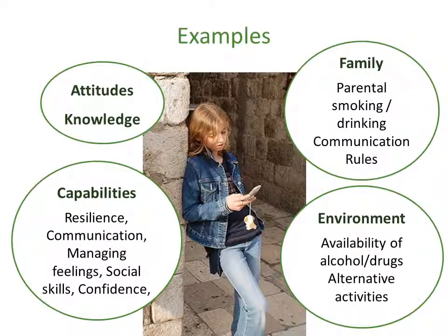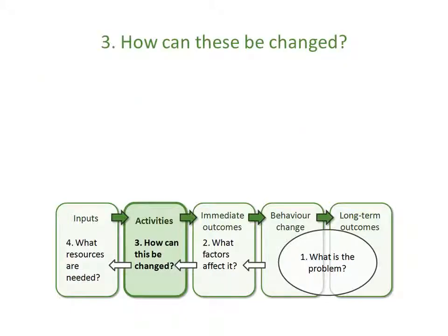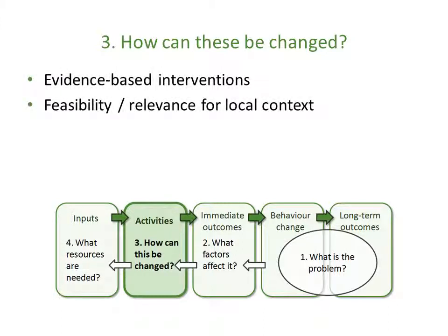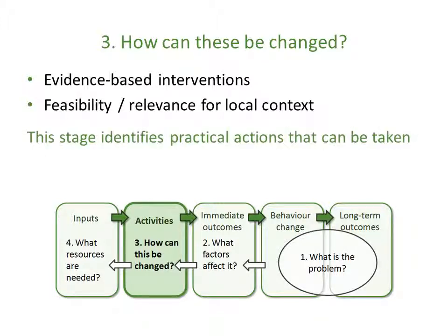Risk and protective factors might be about the people and places surrounding a young person — their family and community — or internal factors such as their knowledge, opinions, and abilities. How can these things be changed? This involves a combination of looking at the evidence base and local knowledge. This stage identifies practical actions.